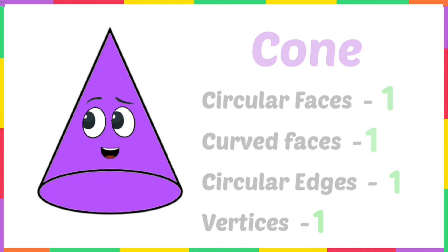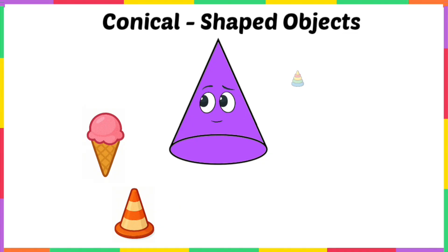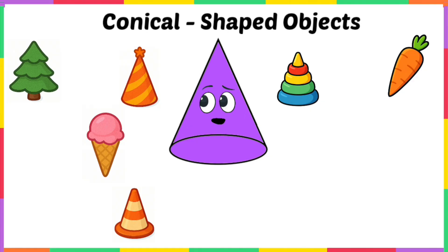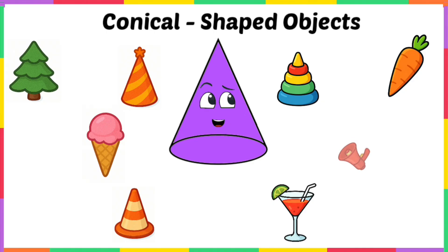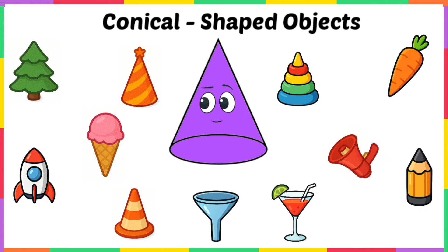You can find me all around you! You can relish me as an ice cream, spot me as a traffic cone, play with me as a toy ring, decorate me as a Christmas tree, eat me as a crunchy carrot, wear me as a birthday cap, sip from me as a mocktail glass, grasp me as a megaphone, pour through me as a funnel, sharpen me as a pencil cone, and fly high with me as a rocket nose. All these objects are in the shape of a cone!